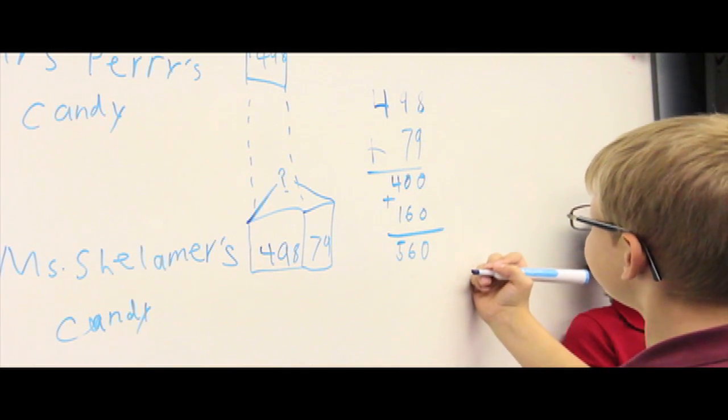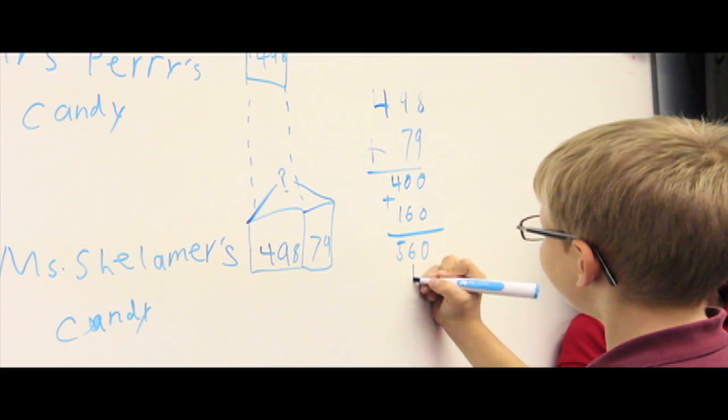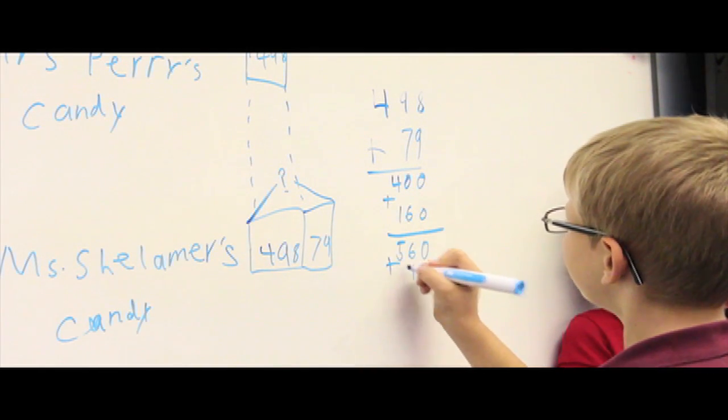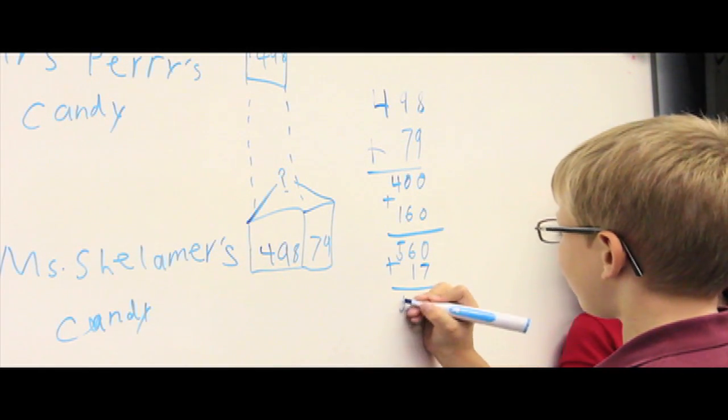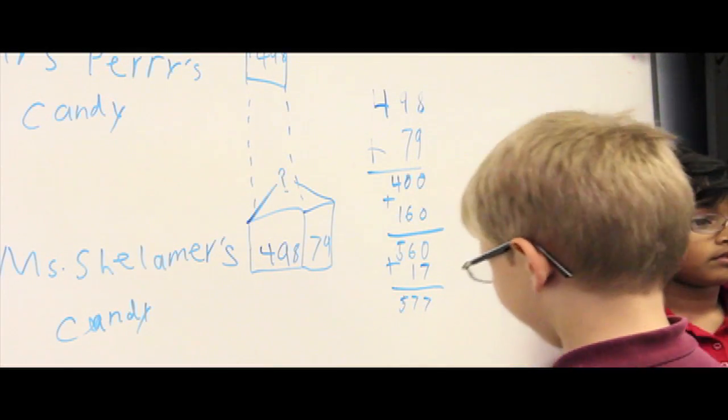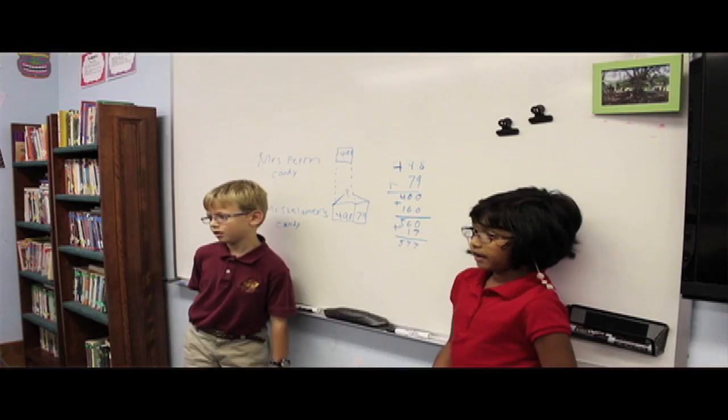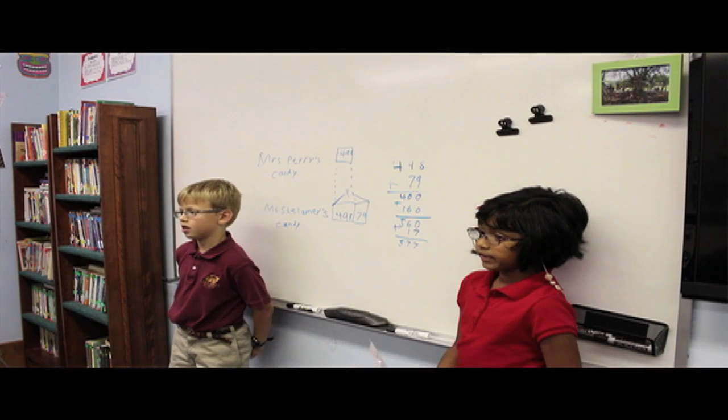8 ones plus 9 ones is 17 ones. Value 17. Mental math 577. Mrs. Shalmar has 577 pieces of candy.